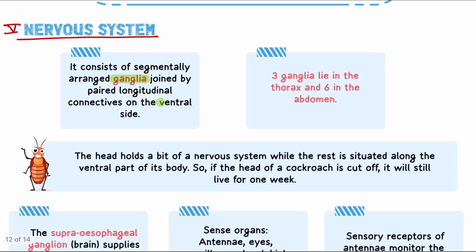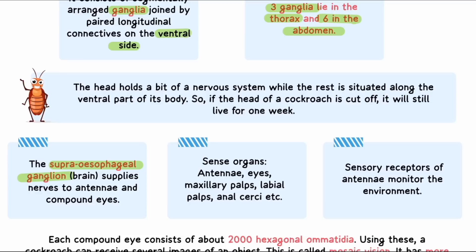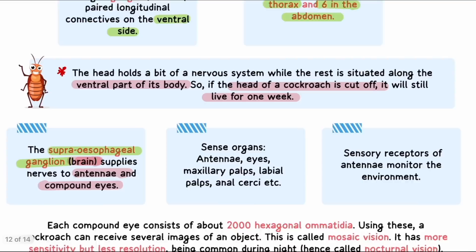In the nervous system, the system is ganglia-based. Ganglia are connected on the ventral side: 3 ganglia in the thorax, 6 ganglia in the abdomen, and 1 brain ganglion (cerebral ganglion) called the supra-oesophageal ganglion. The brain supplies nerves to the antennae and compound eyes. The entire nervous system is present on the ventral part of the body. This is why if the head is cut off, the cockroach can survive for about one week — a point from which questions are asked.